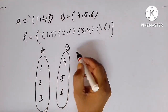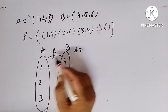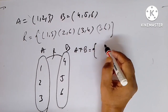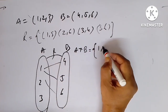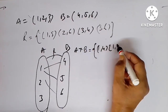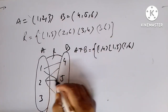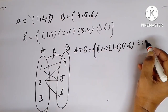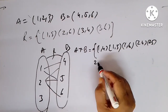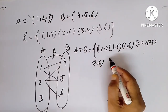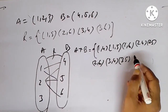We write down A cross B first, since the relation is always defined from A to B. A cross B is {(1,4), (1,5), (1,6), (2,4), (2,5), (2,6), (3,4), (3,5), (3,6)}.